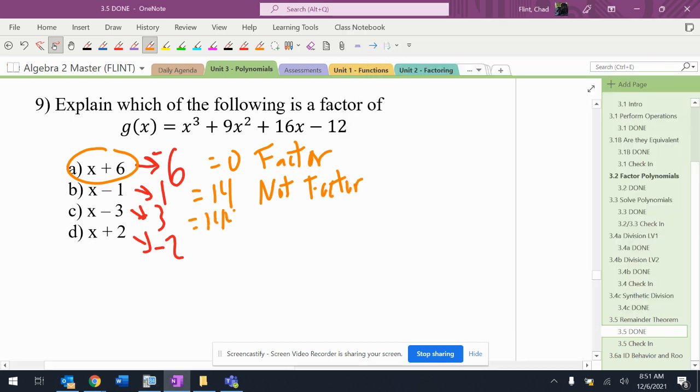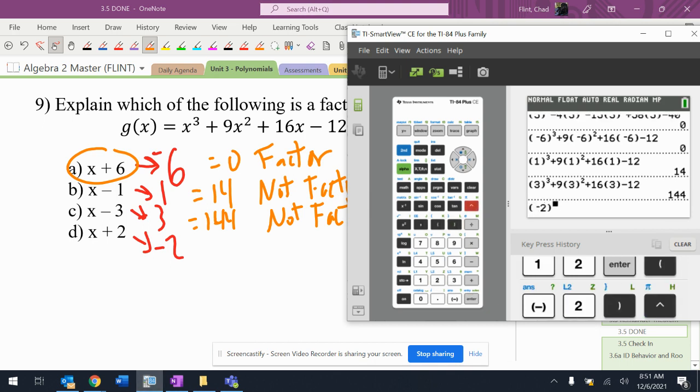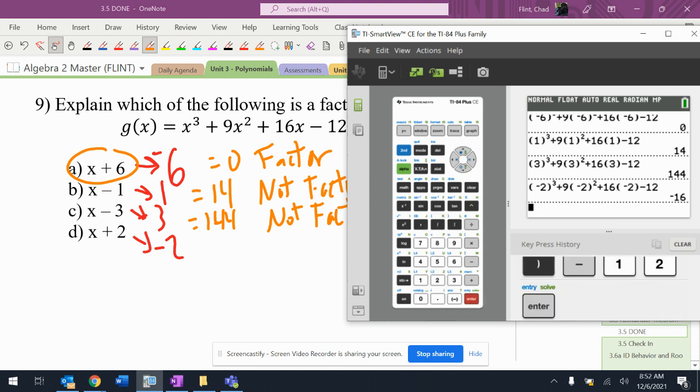So it's definitely not that. And then I'll put negative 2 in there. Negative 2 to the third plus 9 times negative 2 squared plus 16 times negative 2 minus 12. Okay, plus 6 minus 9, negative 6. Close.